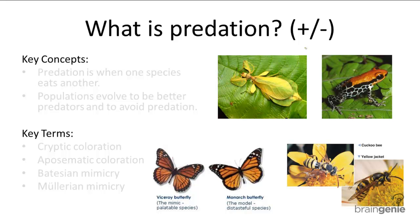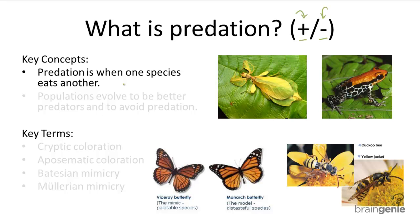Predation involves two different organisms in a positive-negative interaction, so one organism benefits while the other organism suffers costs. To define predation: predation is when one species eats another, meaning there is a predator and a prey involved. The predator is the one that eats the other species, while the prey is the one that's being eaten.